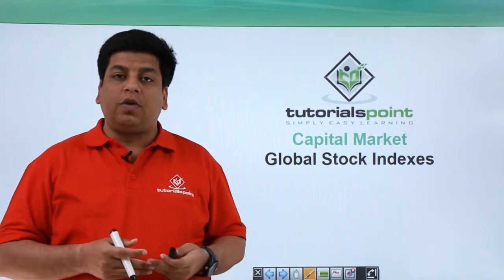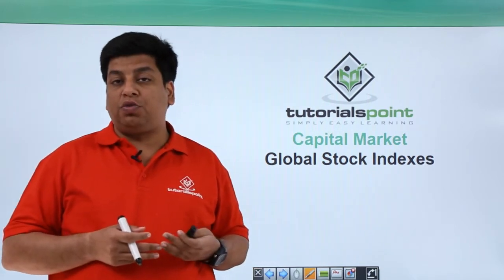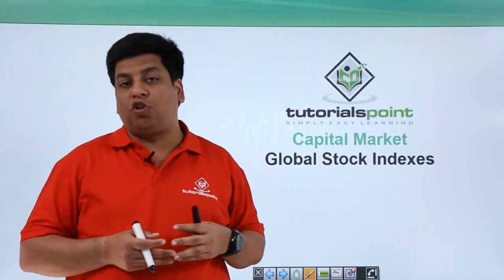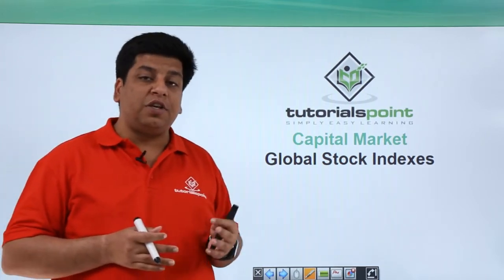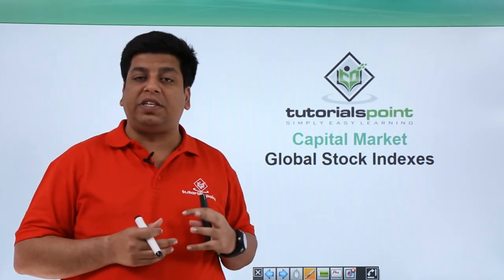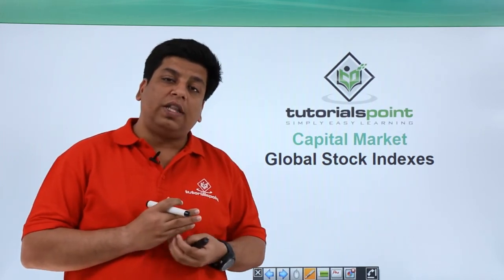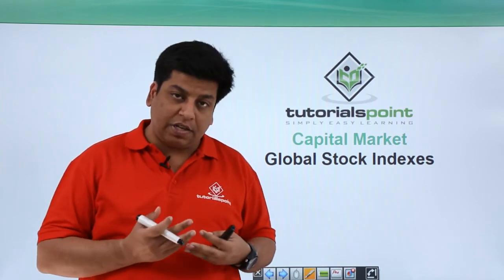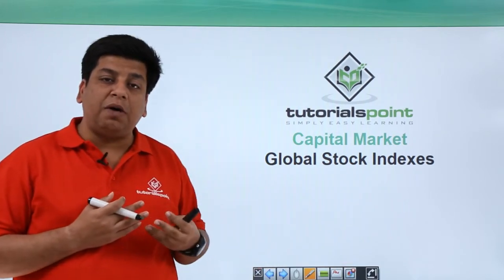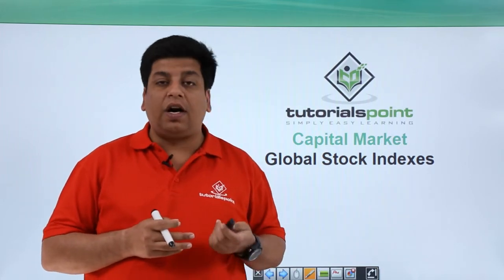Let us go ahead and see some of the global stock indexes. Before we go to the details, let us understand what indexes are. Basically, we pile up a certain number of stocks from different categories and present them as one kind of instrument or common stock, which is called an index. For example, what we call NIFTY is the National Stock Exchange 50 companies. Let us see what other types of indexes exist around the world.